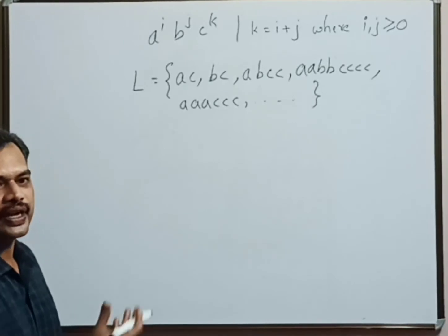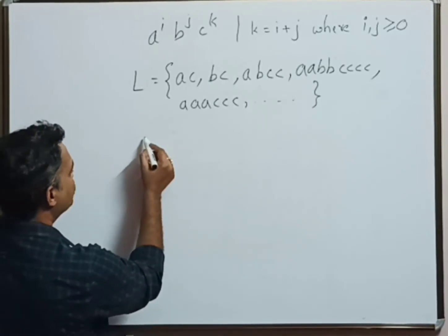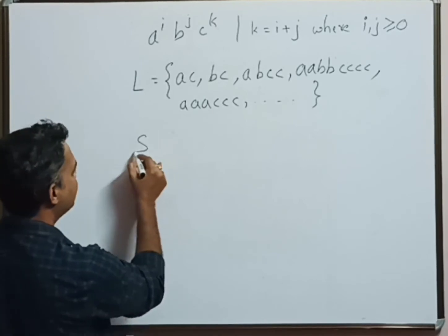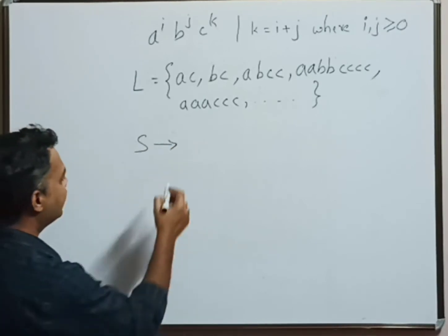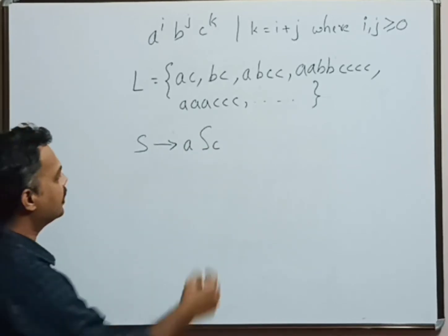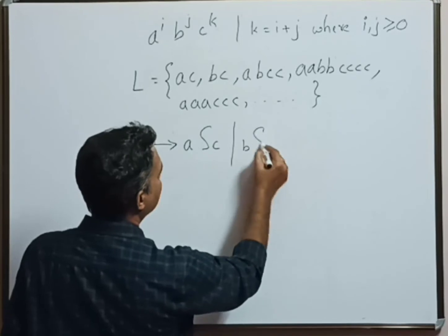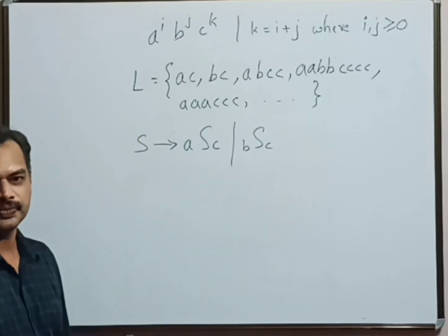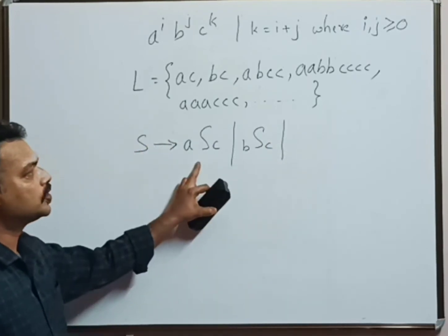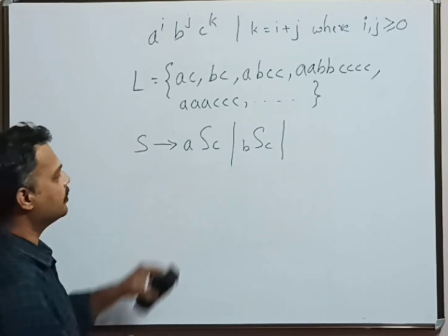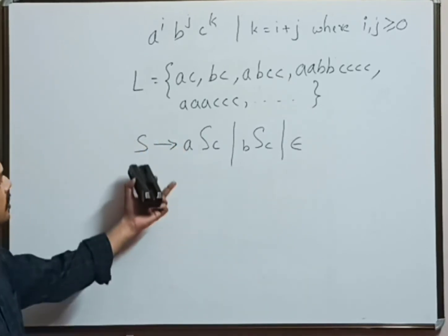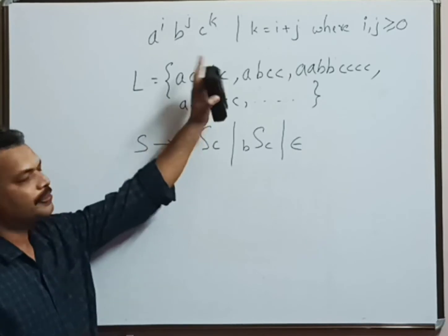Let us start designing the CFG. First, start state S. Now for every a there is a c, and this recursion has to be stopped at a certain point of time. For that we can make use of epsilon. So this is the simplest typical solution for this typical problem.